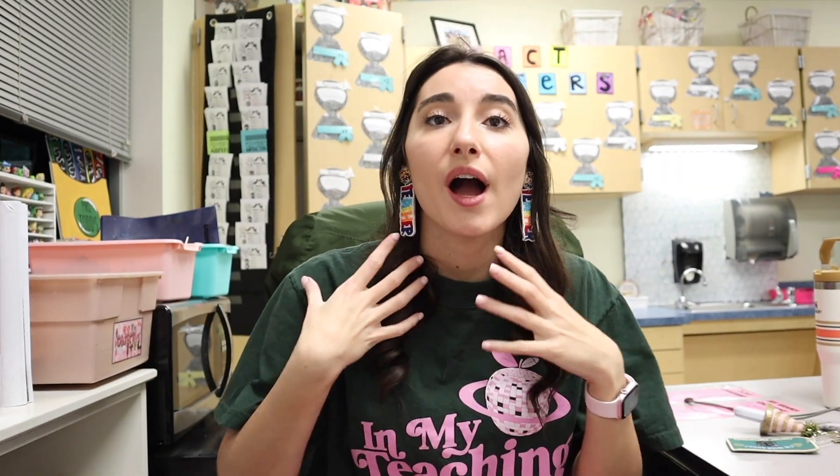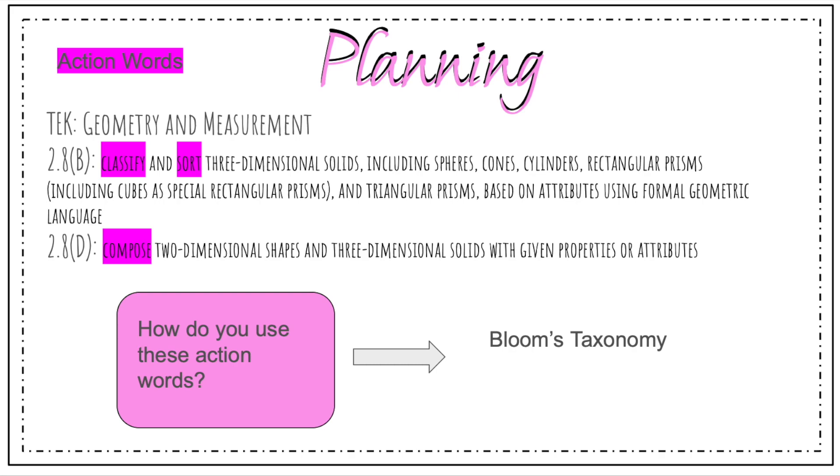I went through and highlighted our action words. Action words are what establishes a TEKS based on Bloom's taxonomy, which I'll go over in a second. I highlight them in a different color — in this case I highlighted them pink. Our action words for 8.B are classify and sort, and 8.D is to compose.